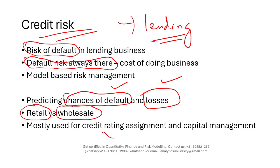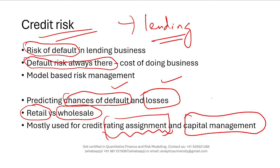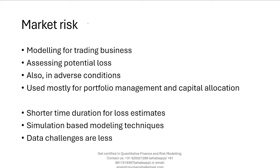Credit risk modeling is primarily for rating assignment — you assign a credit rating to a customer and based on that you charge an interest rate, which is risk-based pricing. You can also use it for regulatory purposes, such as determining how much capital to keep. It's an interesting career option for those interested in both finance and mathematics and coding. As I've said many times, most quants work in risk modeling, and within risk modeling, most work in credit risk modeling — so there are simply so many vacancies in this area.